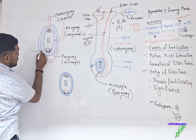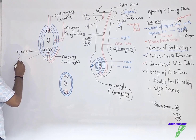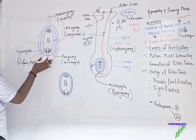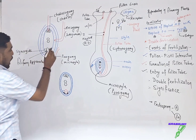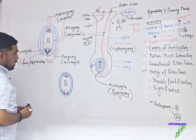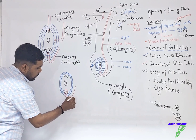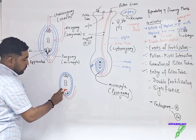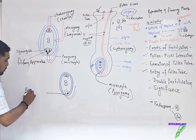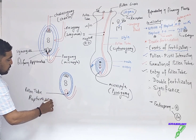Inside the synergids there is something very important called the filiform apparatus — a finger-like projection that attracts the pollen tube toward itself for fertilization. After getting attracted, the filiform apparatus provides some sugary fluid to the pollen tube, causing excess pressure, and the pollen tube ruptures one of the synergids.